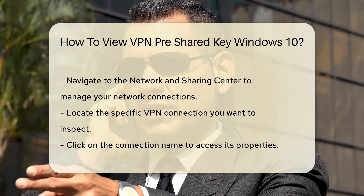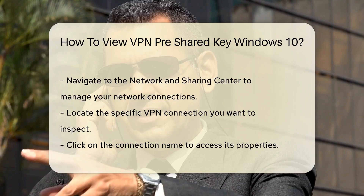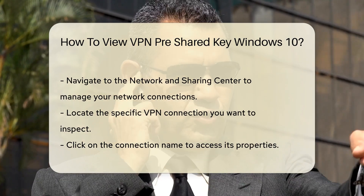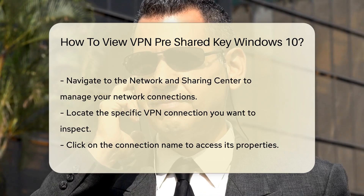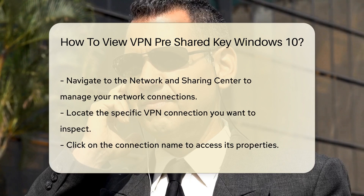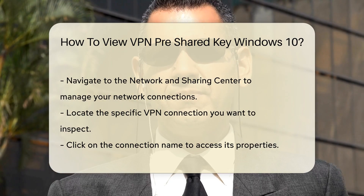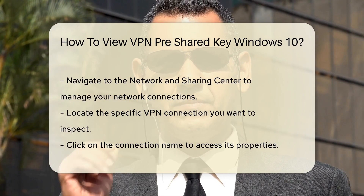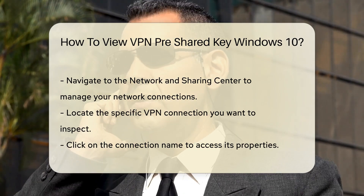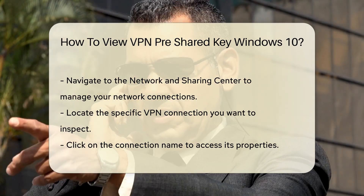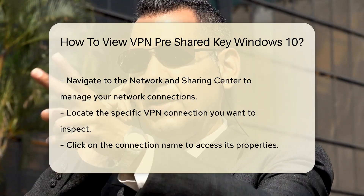Next, locate the VPN connection you wish to inspect and click on the connection name to access its properties. In the Properties window, you will find various settings related to your VPN. Look for the Security tab, which contains information about the type of security protocol your VPN uses.